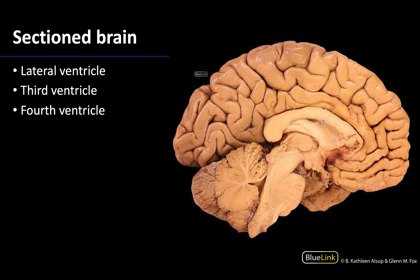The lateral ventricles are located within the cerebral hemisphere — if I were to poke through this general region into the cerebral hemisphere, you would be looking into the space that makes up the lateral ventricles, associated with the cerebrum. The third ventricle is located between the halves of the diencephalon, in this general region right here. The fourth ventricle lies between the brain stem and the cerebellum, so this is the general region for the fourth ventricle.